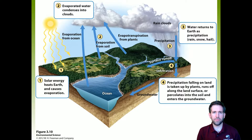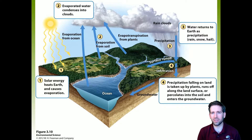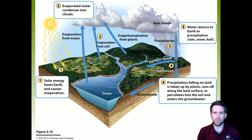There is water on Earth — the hydrosphere — and sunlight hits that massive body of water that's roughly 70% of the Earth's surface. That's going to lead to a good amount of evaporation. So step one: solar energy heats Earth and causes evaporation. The water evaporates, turns from a liquid into a gas, and rises up.